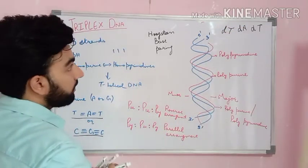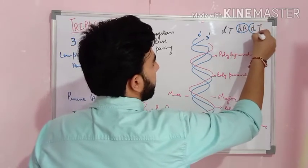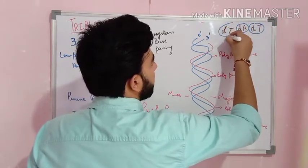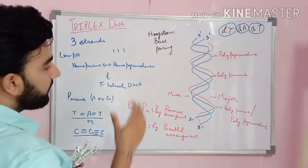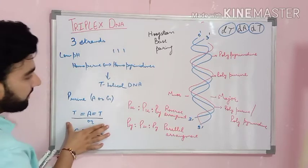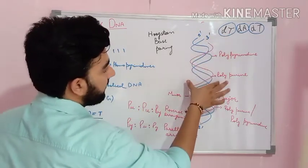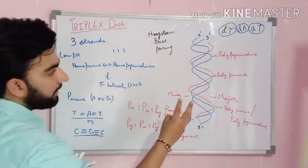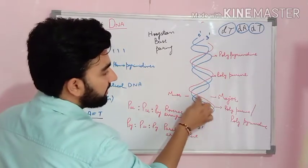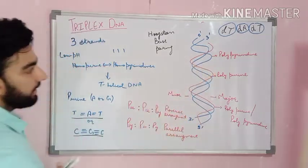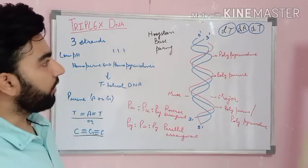The central strand, the second strand, and the third strand are written — the third strand always in italic form. The Hoogsteen base pairing helps in the formation of this triple helical DNA, and the third DNA strand combines along the major groove of the double stranded DNA, forming this structure.